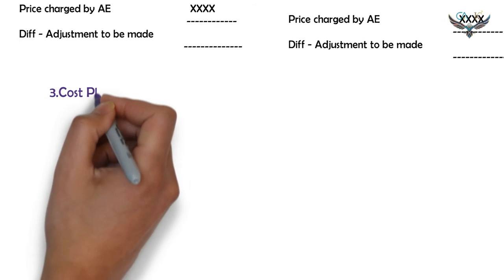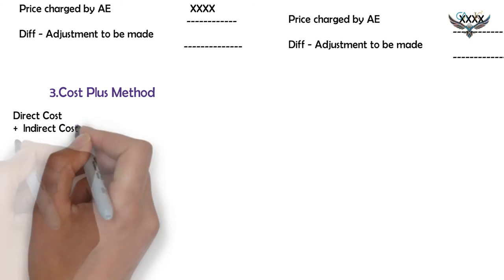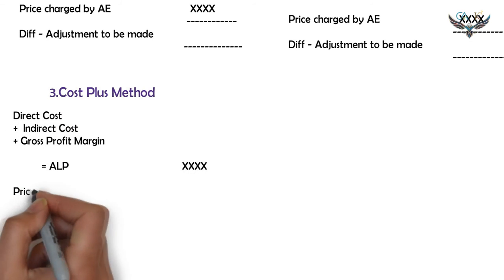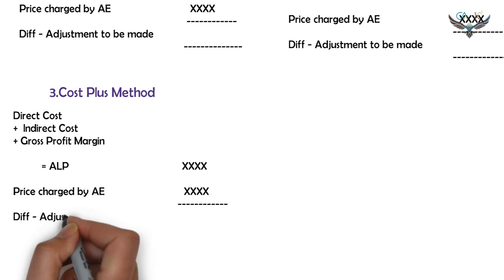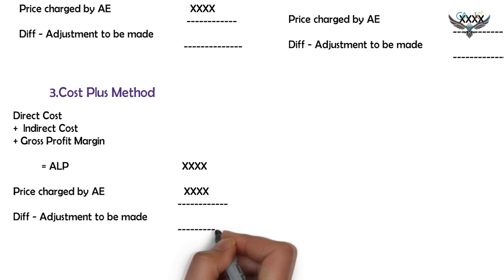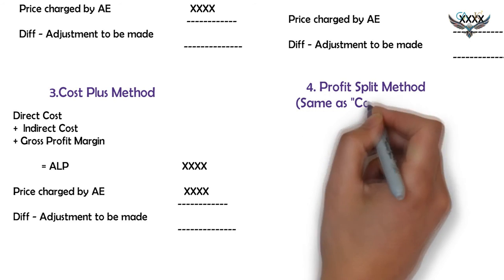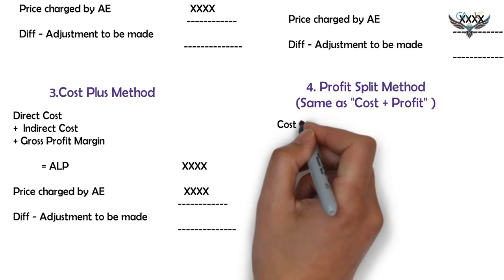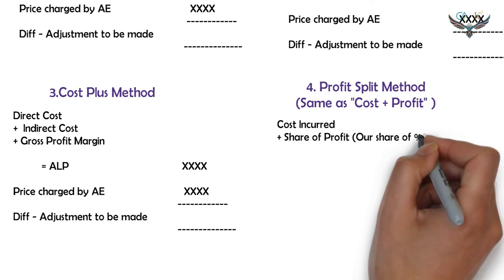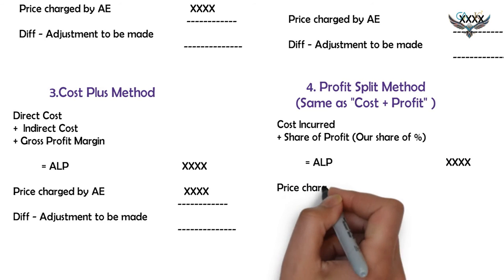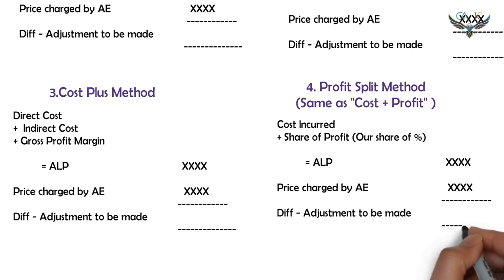The third method is the Cost Plus Method, in which the direct cost, indirect cost, and normal gross profit margin are added to arrive at the arm's length price. From the arm's length price, deduct the actual price charged by the associated enterprise to arrive at the transfer pricing adjustment. The fourth method is the Profit Split Method, which is similar to the Cost Plus Method — calculate the cost incurred by the associate and add each party's share of total profit to arrive at the arm's length price, then deduct the actual price charged to arrive at the transfer pricing adjustment.